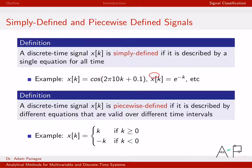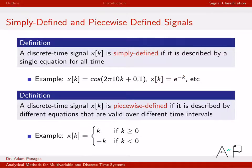Similarly, x of k equals e to the minus k — that's an equation that holds for all time. No matter what value of k you're given, you plug it into this one single equation. So if the signal can be written down as a single equation that is true for all time, we call that a simply defined signal.